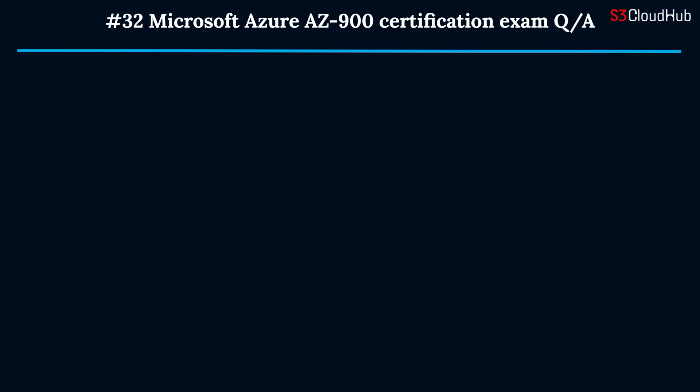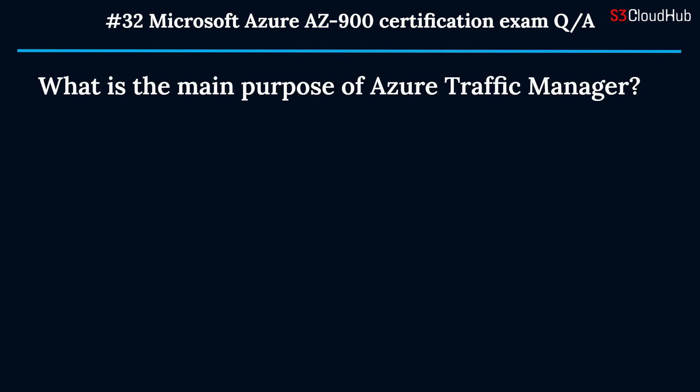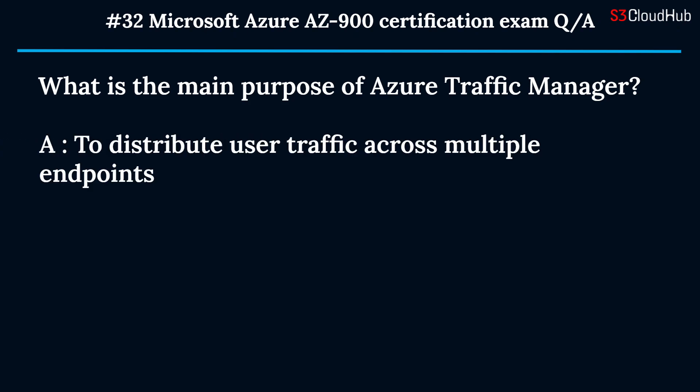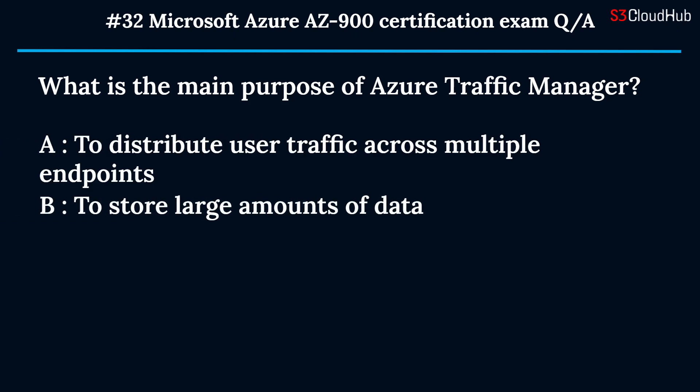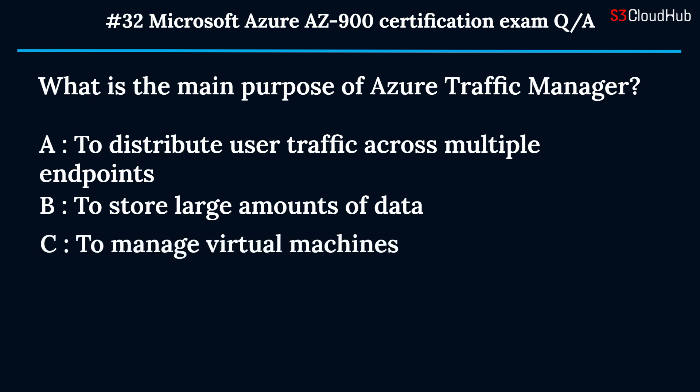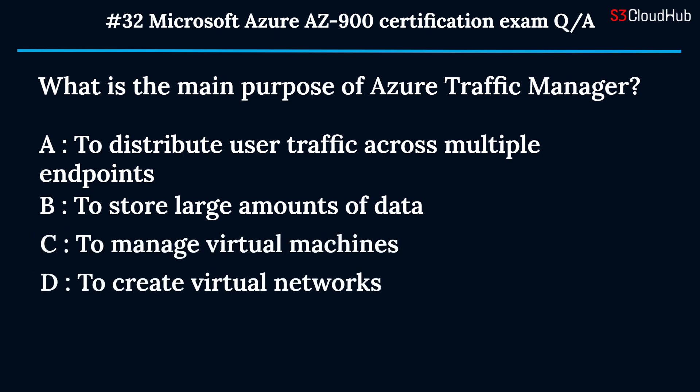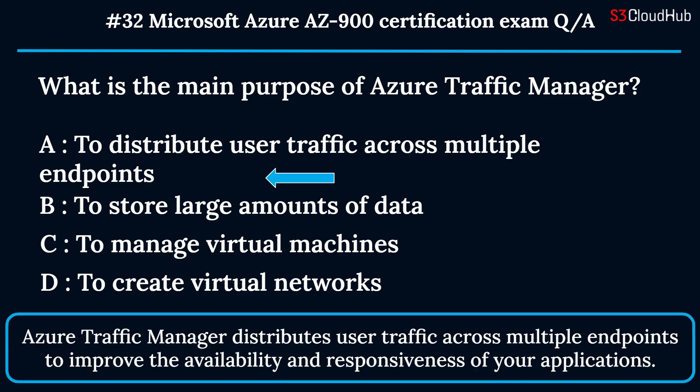The thirty-second question: what is the main purpose of Azure Traffic Manager? Option A: to distribute user traffic across multiple endpoints. Option B: to store large amounts of data. Option C: to manage virtual machines. Option D: to create virtual networks. The correct answer is option A. Azure Traffic Manager distributes user traffic across multiple endpoints to improve the availability and responsiveness of your applications.